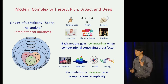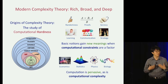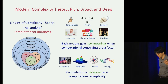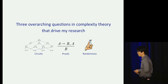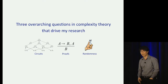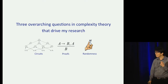Complexity theory has really grown to be a broad and vibrant field, and it's super exciting to be working in complexity today. One of the things I like most about complexity theory is that it's driven by really basic and fundamental questions about computation. These questions are always simple to state, simple to understand, and they get to an essential aspect of computation. I'd like to start with three examples of such questions that have driven my own research.